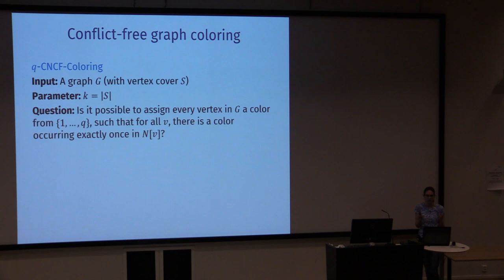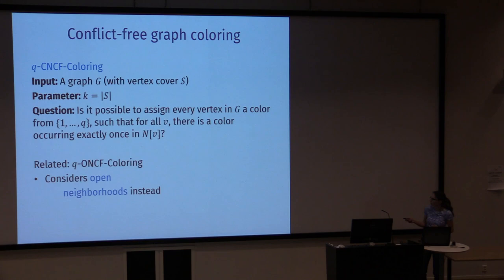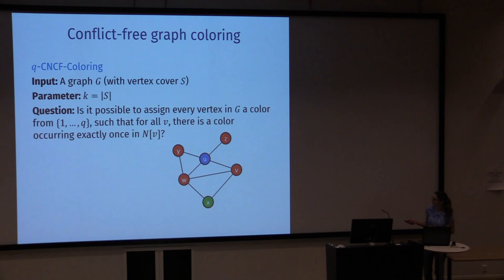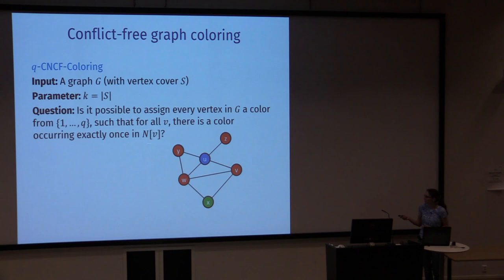Here I am discussing close neighbourhoods, but you can naturally ask the same question for open neighbourhoods, giving you the Q open neighbourhood conflict-free graph colouring problem. As an example, suppose we have this graph — we can colour it with three colours. This is not a proper colouring because we have two connected red vertices, but it's a close neighbourhood conflict-free colouring. Vertex U has exactly one blue vertex in its close neighbourhood — namely itself — and vertex X is the only green vertex in its close neighbourhood.